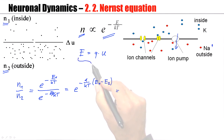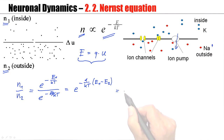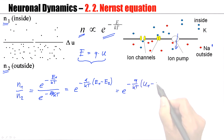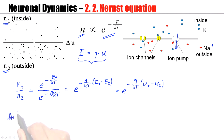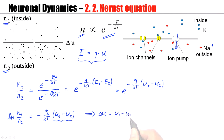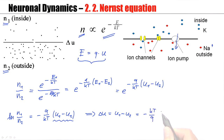Using the expression for the energy of charged particles, E = q·u, we find the ratio N1 over N2 equals e to the power of minus q over kT times (u1 minus u2). Taking the logarithm, the logarithm of N1 over N2 equals minus q over kT times (u1 minus u2). Solving for the voltage difference u1 minus u2, we get delta u equals minus kT over q times the logarithm of N1 over N2.